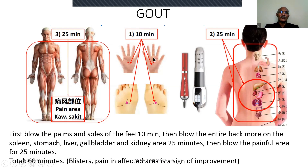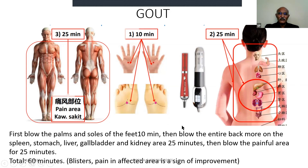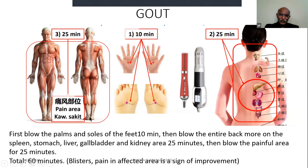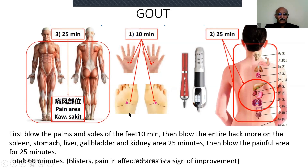For gout: you might want to start with the palms and soles, then the back area — the organs are all interlinked and they all need to play a part. When they all work together you will see relief. Then focus on the gout-affected areas, mostly at the soles, ankles, and joints. If you don't have time, go directly to the affected areas — it does work, but the full method works even better.